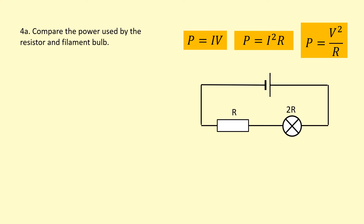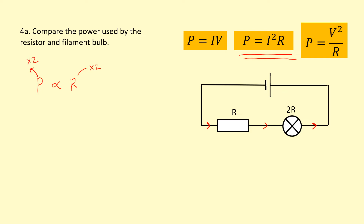Compare the power used by the resistor and the filament bulb. The resistor has resistance R and the filament bulb has resistance 2R. Because they're in series, the current through them is the same. Using P equals I squared R, and treating current as a constant, power is directly proportional to resistance. So if the bulb has twice the resistance, it will use twice the power.